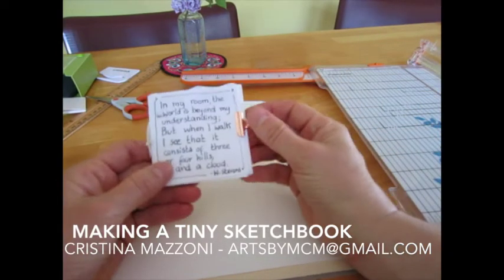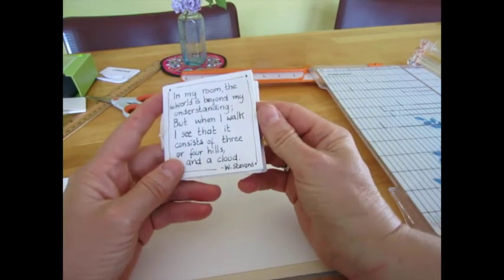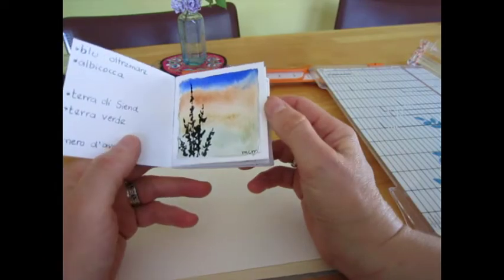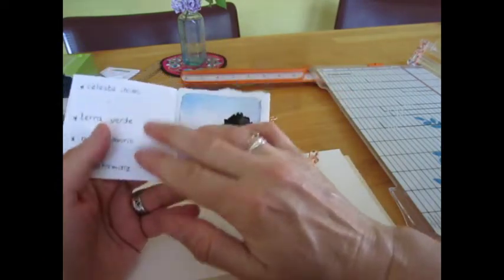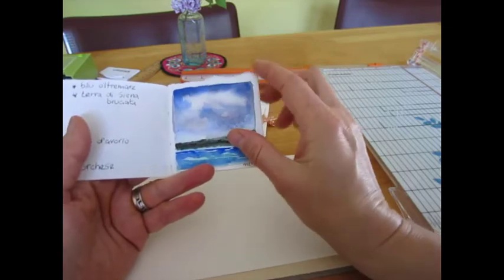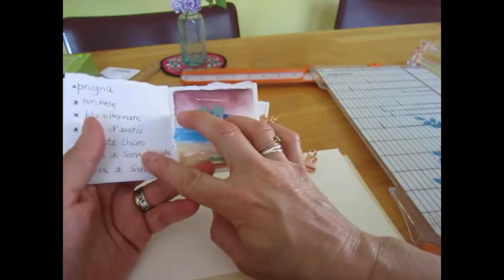I've been making these little tiny sketchbooks. I showed this one in a previous video where I used it to test my handmade watercolors. I wrote the colors I used and made teeny tiny landscapes without drawing, just first outlining with a pencil the square I'm working on.